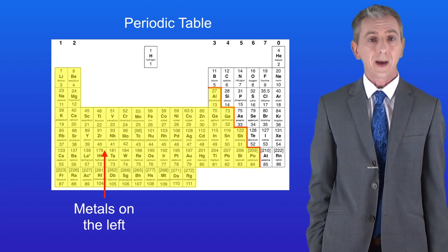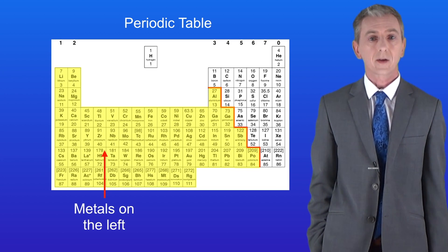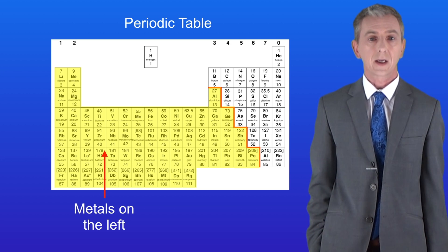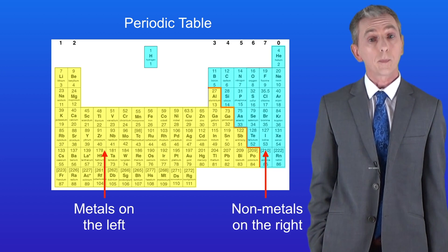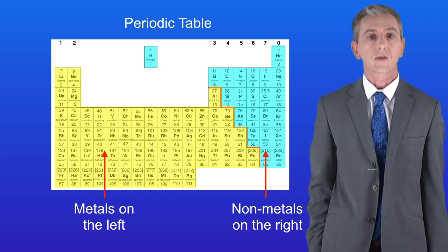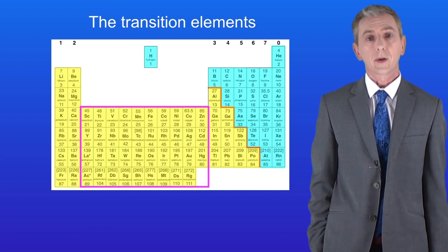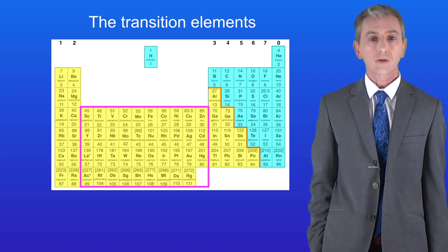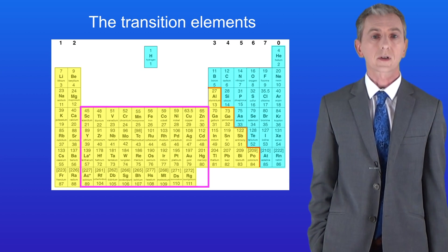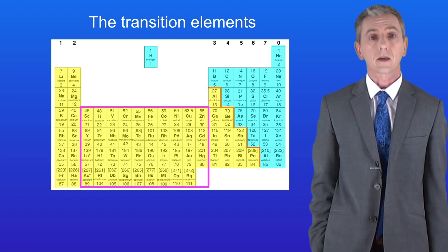Remember that we find metals on the left-hand side of the periodic table and non-metals on the right-hand side. The transition elements are found in the central part of the periodic table and these are all metals.